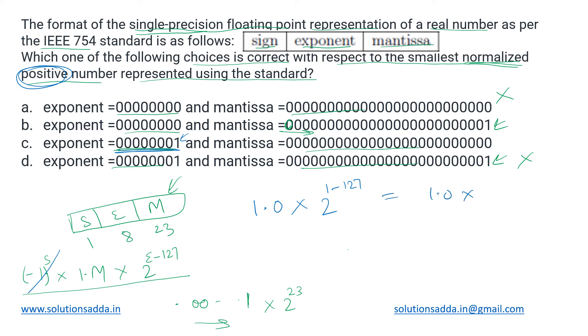1.0 into 2 to the power minus 126, or this is zero after decimal point, so we can simply skip this part and write it as 2 to the power minus 126. This is the smallest positive number we can represent in this number format. So the correct answer would be C. The smallest positive number represented in the standard is denoted by option C.